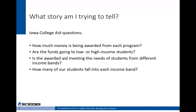For the Iowa College Aid project, we came up with a few specific questions that led to the visualizations we created. The first was: how much money is being awarded from each program? Iowa has several different pots of aid and it was important to understand how much was being awarded under each. The second question was: are the funds going to low or high income students? The third was whether or not the awarded aid is meeting the needs of students from different income bands. And finally, how many of the aid-receiving students fell into each income band?